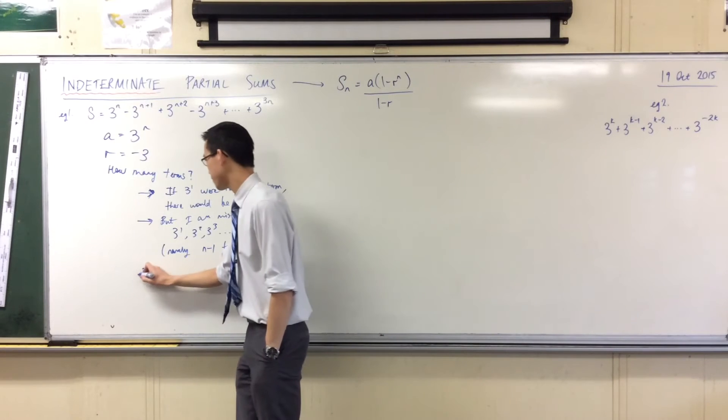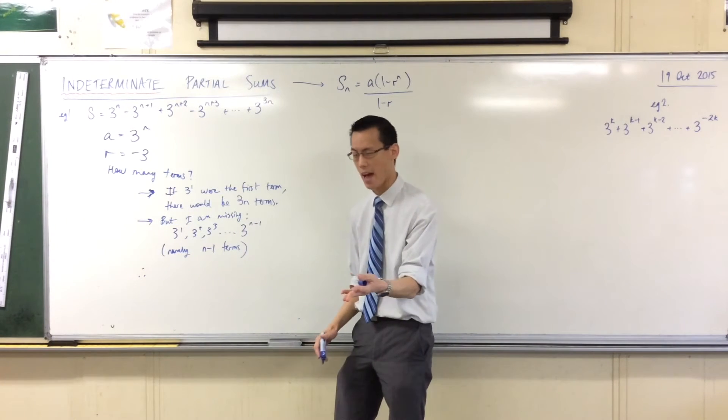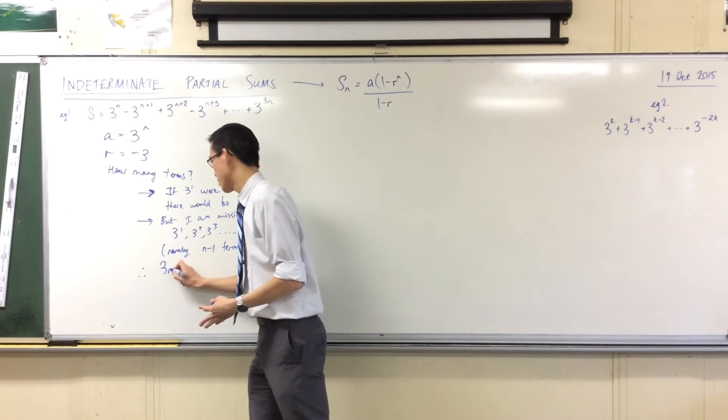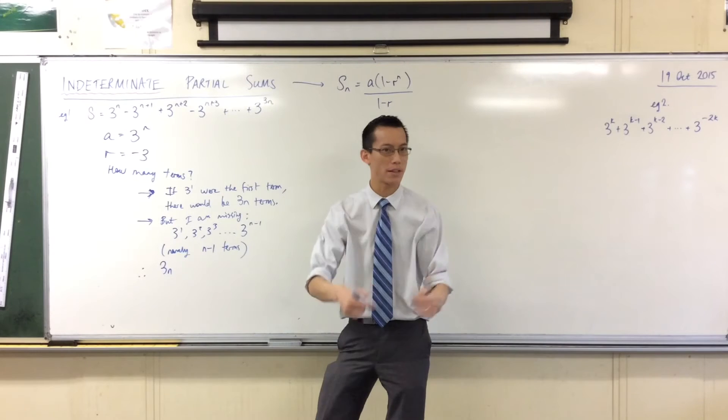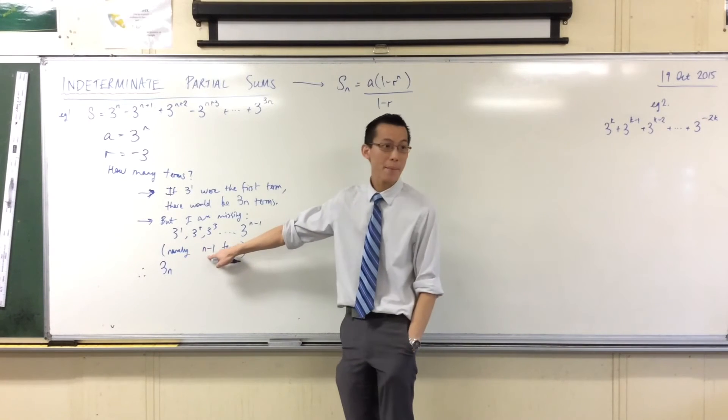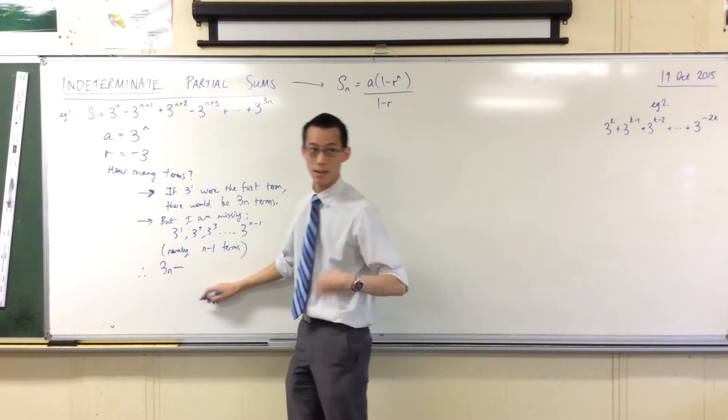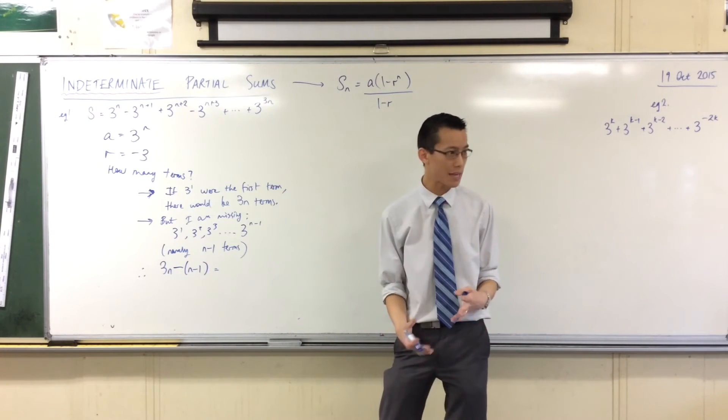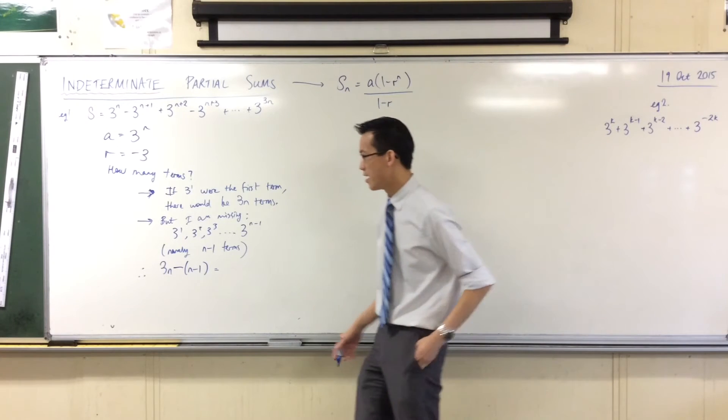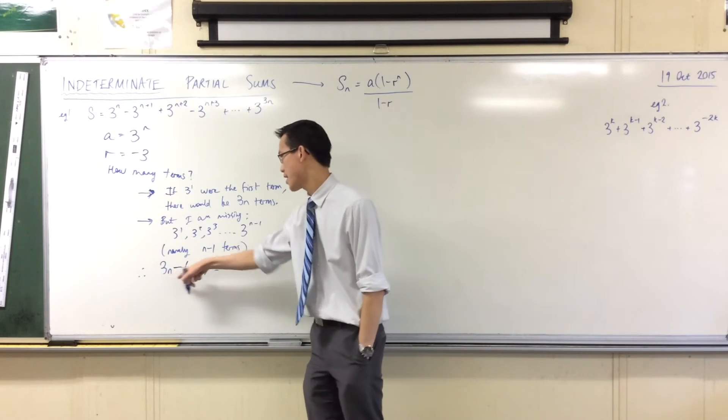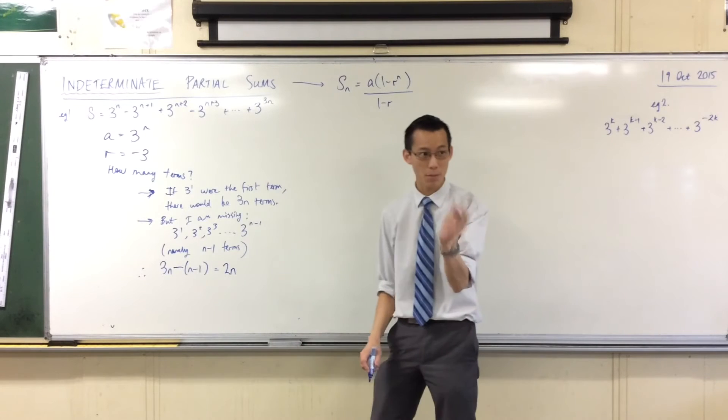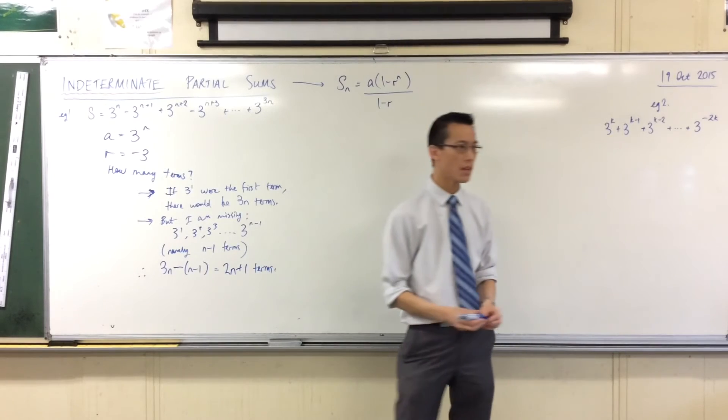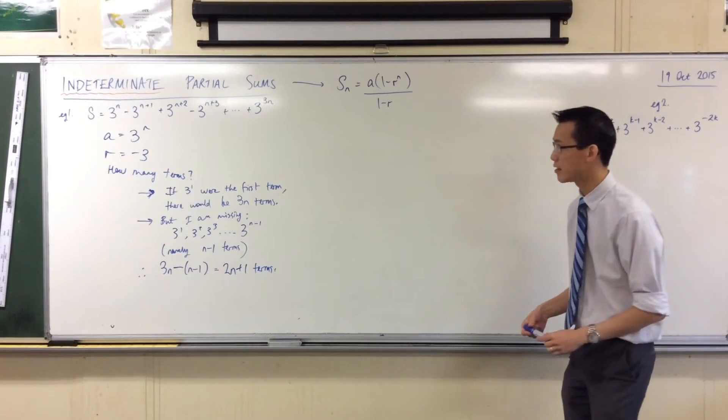In other words, that's n minus 1 terms. That's how many I've sliced off. Are you okay with that? So, therefore, how many terms do I actually have? Well, it would have been 3n if I'd started at 1. But it doesn't start from 1. I'm missing a whole bunch of terms. How many? That many. So it's going to be 3n, and I'm going to take away the number of missing terms, n minus 1. Are you okay with that? Do you see how I'm trying to unpack this? So, therefore, there are 3n take away n, which is 2n, what's the double negative, plus 1 terms.